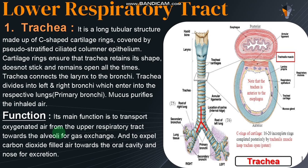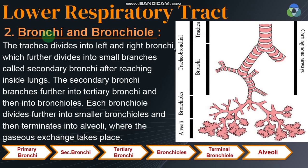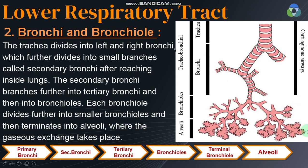The trachea divides into left and right primary bronchi. After entering the lungs, they further divide into secondary bronchi, and then into tertiary bronchi. Up to the tertiary bronchi, cartilaginous rings are present.